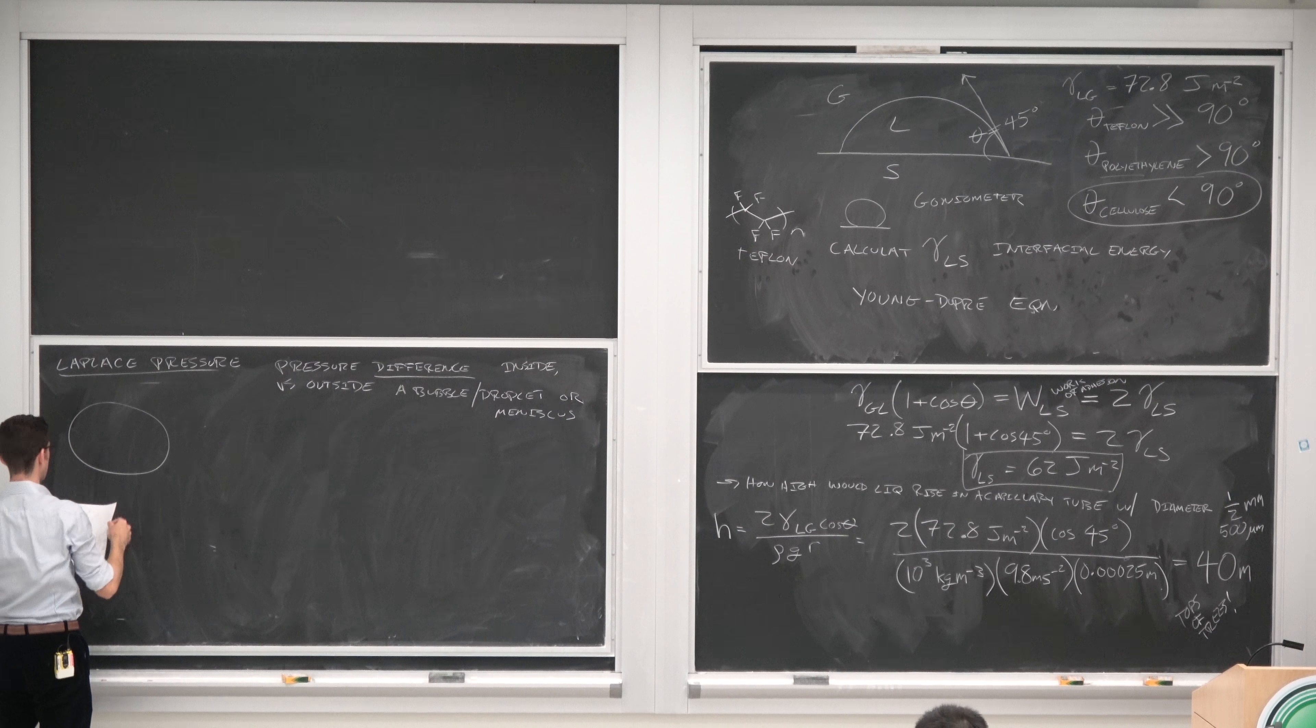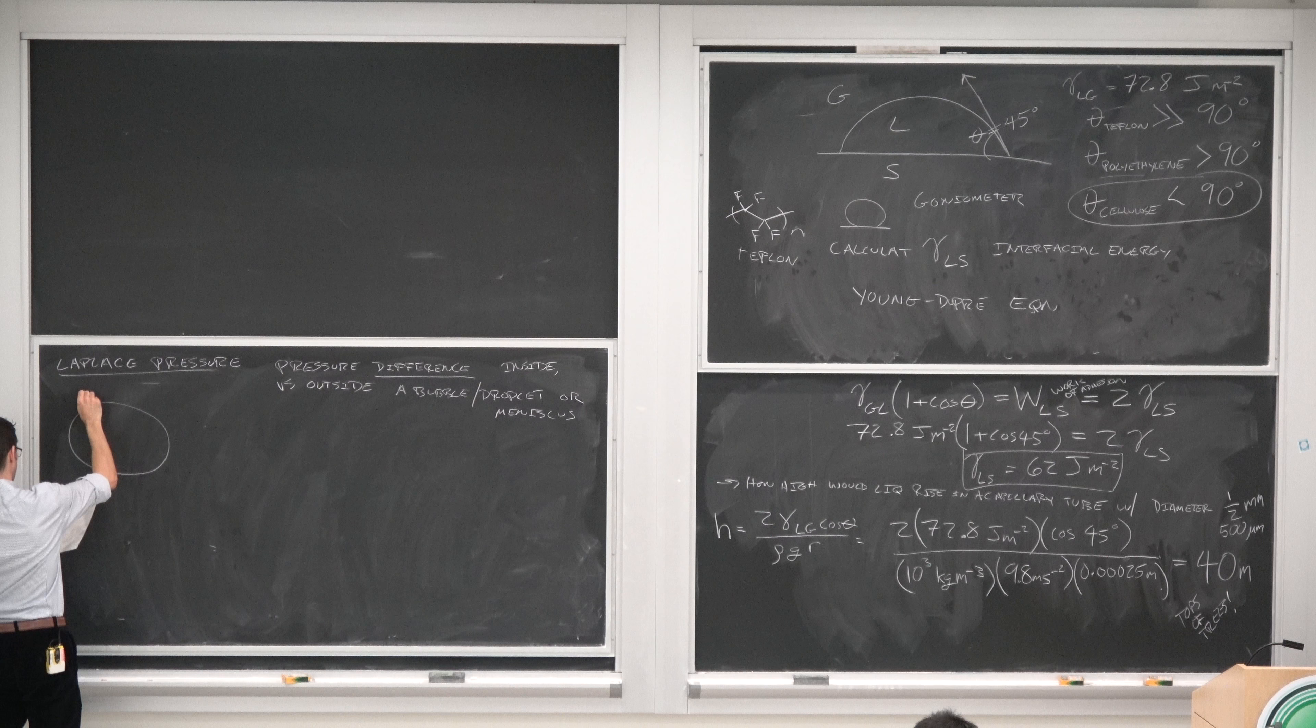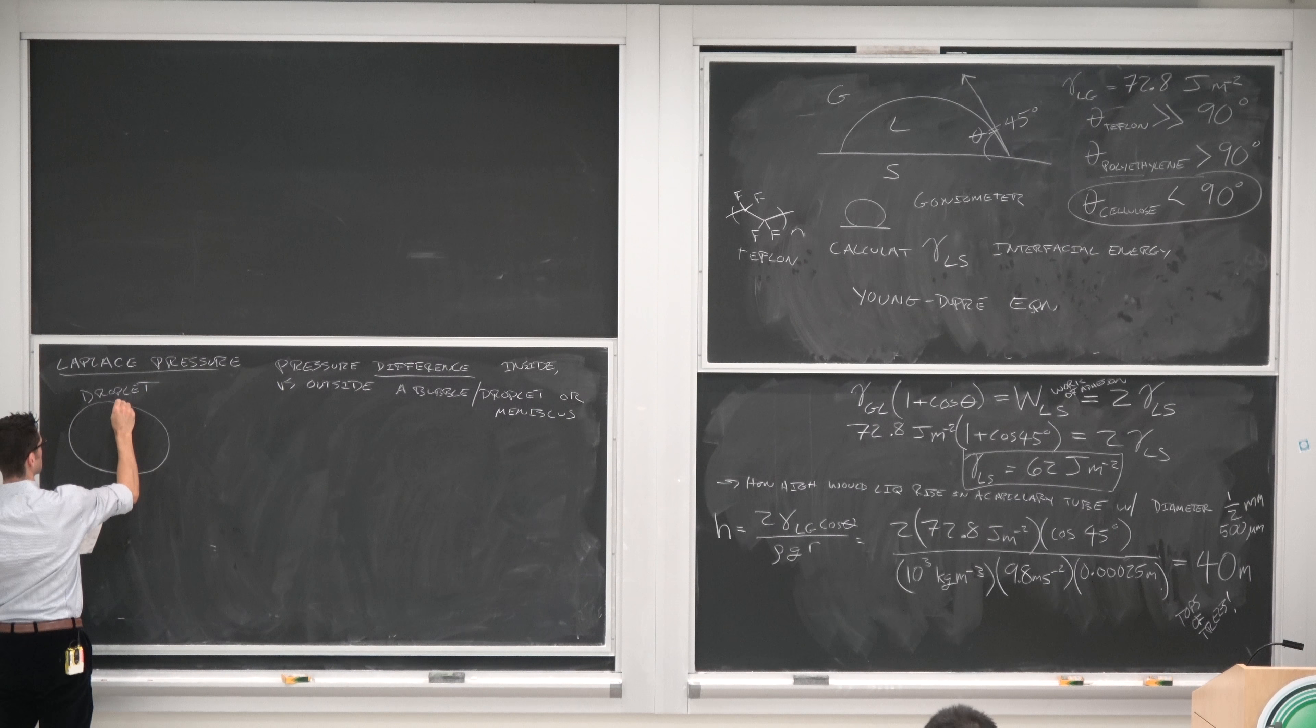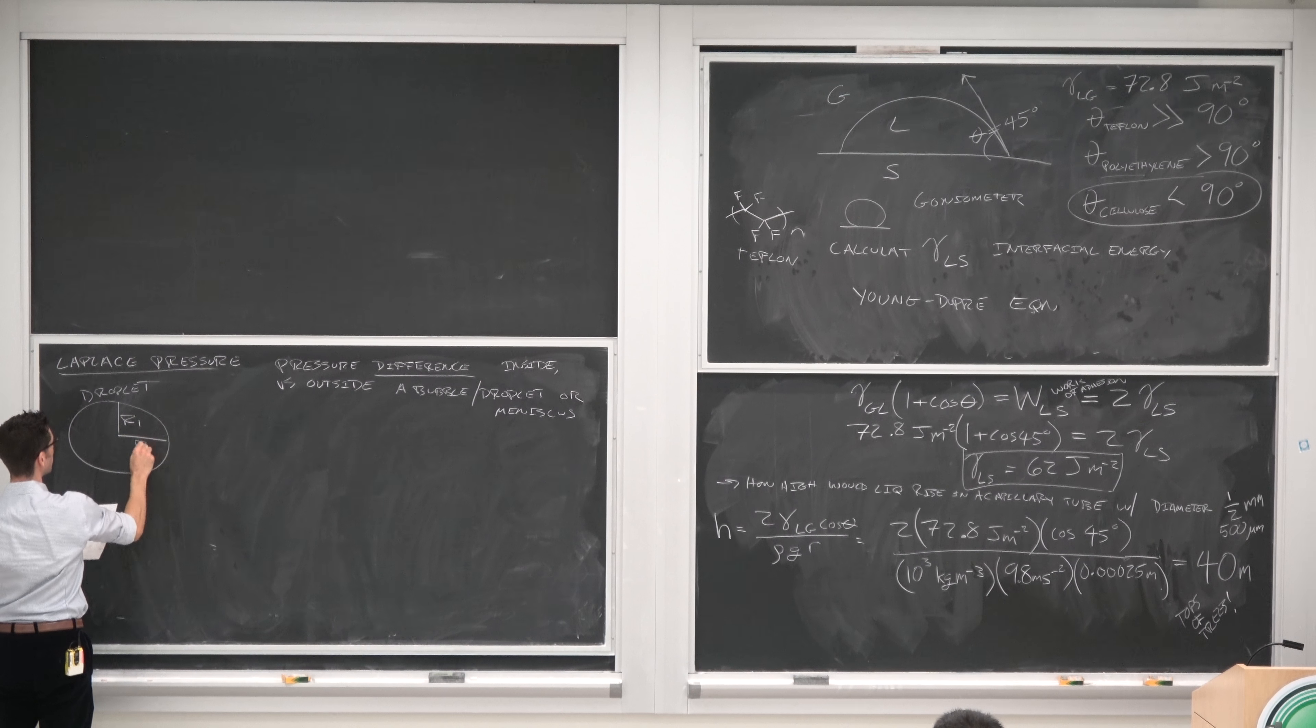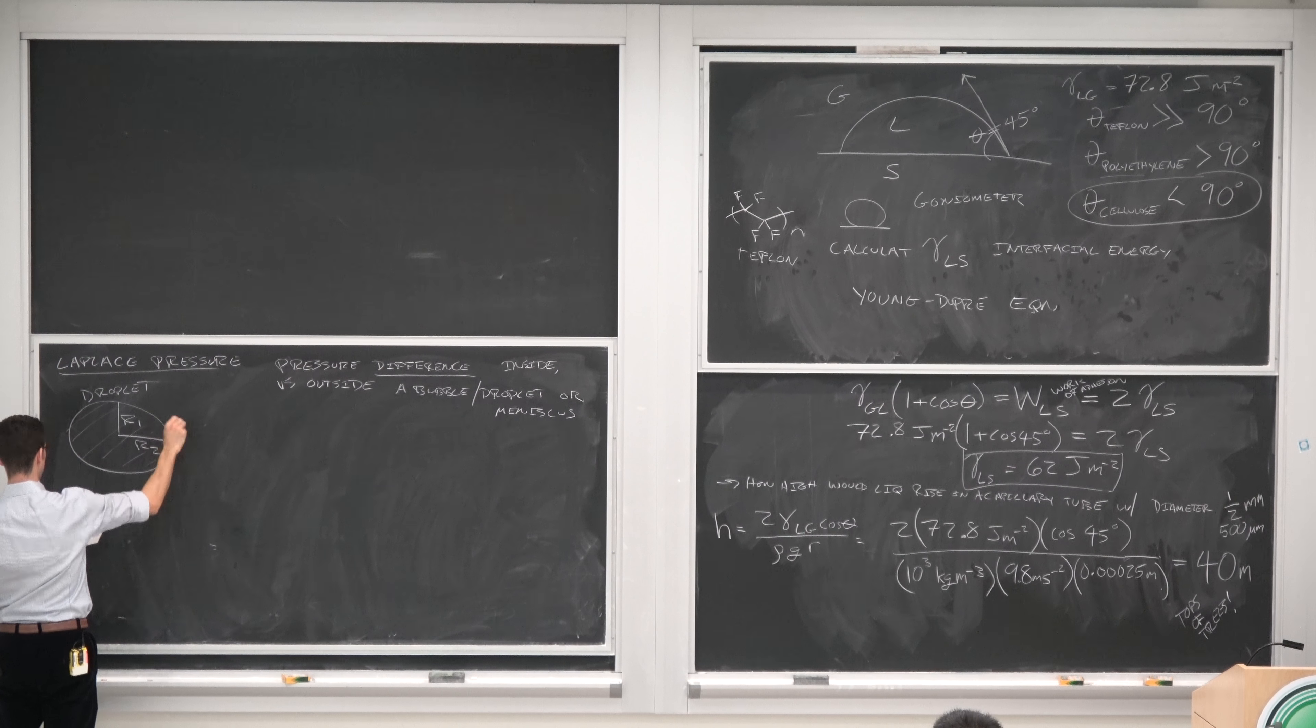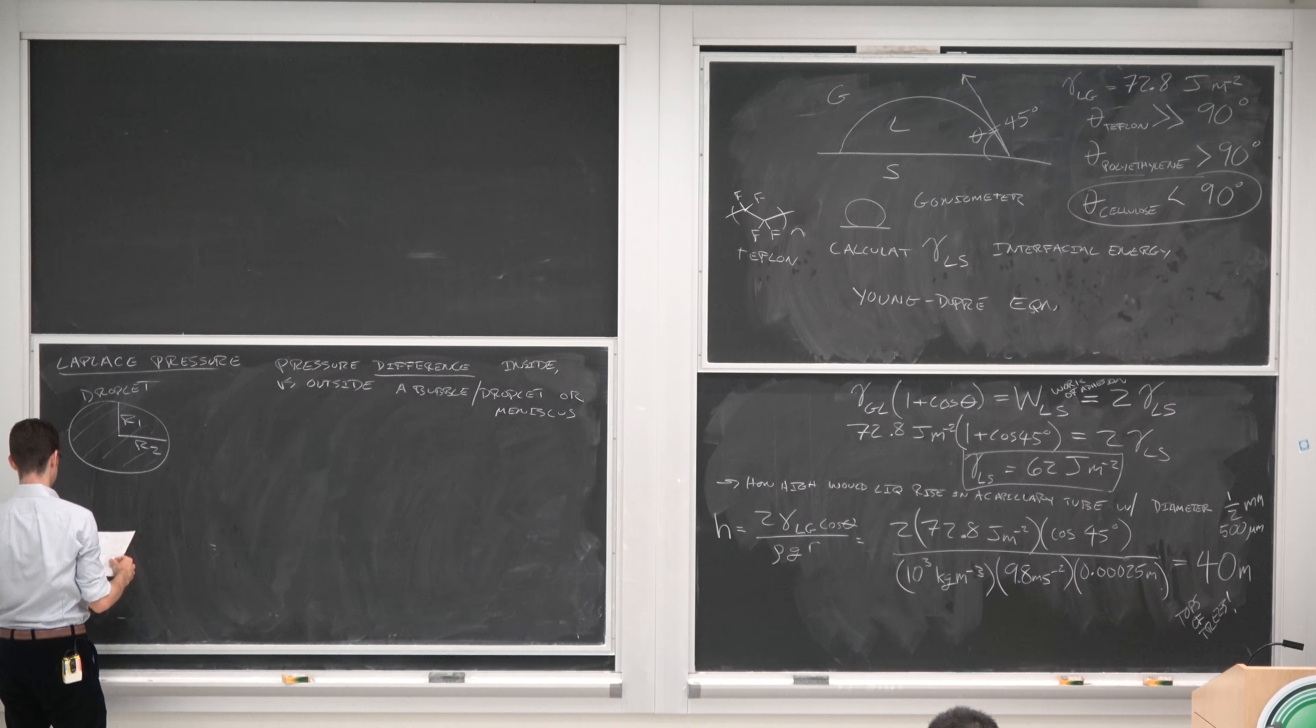So bubbles and droplets are usually spheroidal or ellipsoidal. So a droplet has two semi-major axes, R1 and R2. And we'll draw these lines here to indicate the fact that this is a different phase than the exterior.